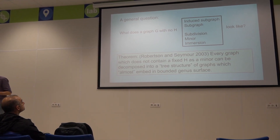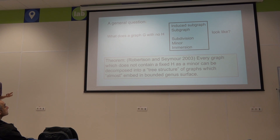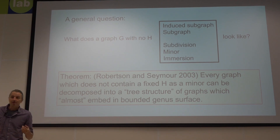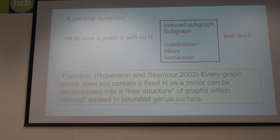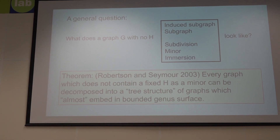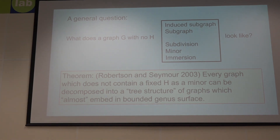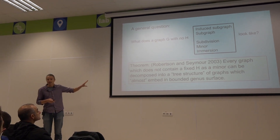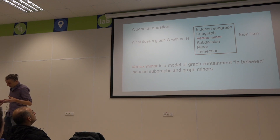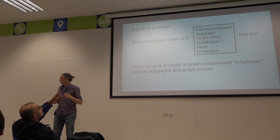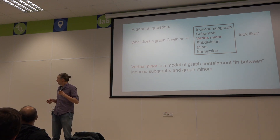One of the more famous results in this area is the structure theorem of Robertson and Seymour. It says that every graph which does not contain H as a minor can be decomposed into a tree structure of graphs which almost embed in bounded genus surfaces. Within those quotes there's a large amount of technicalities. I want to keep this theorem as a reference and instead look at a model of graph containment which has received less attention until now, which is that of vertex minors.